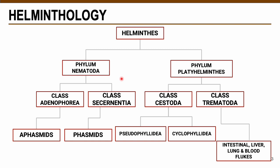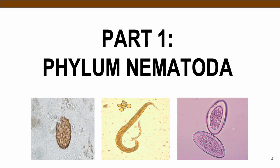In this video, we'll talk about phylum Nematoda, which comprises two classes: Adenophorea and class Secernentea. Under these we have your apasmid and phasmid roundworms, also known as nematodes.